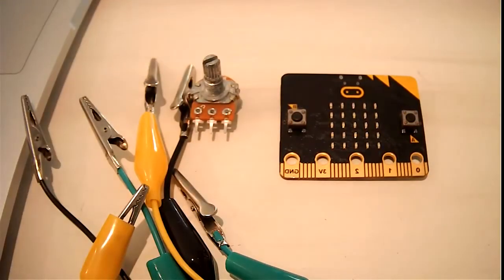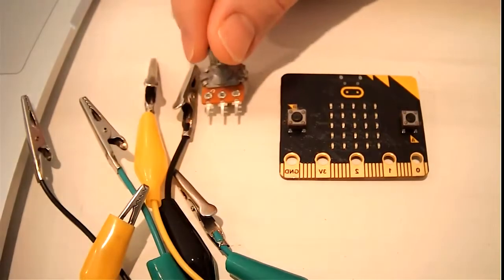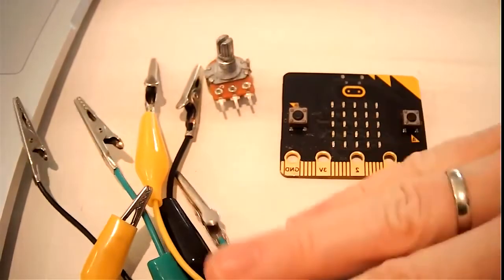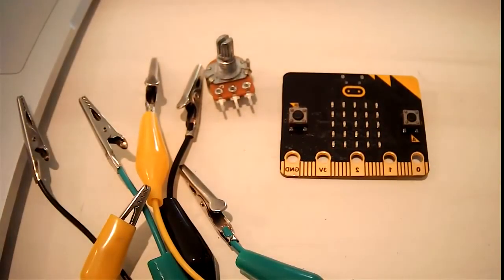Okay, welcome. Today in this video we're going to show how to take a microbit and connect it to a potentiometer using these alligator clips. That's quite simple.